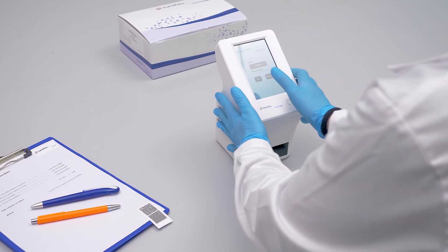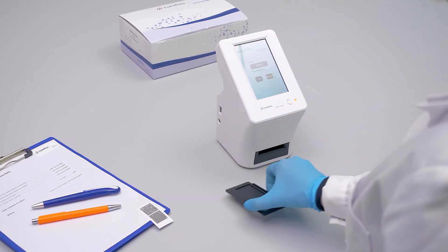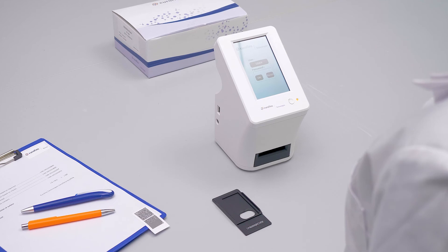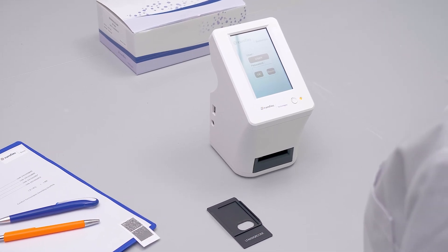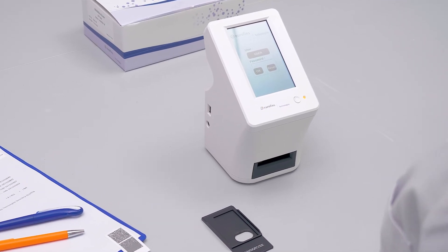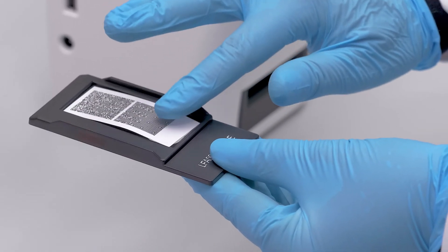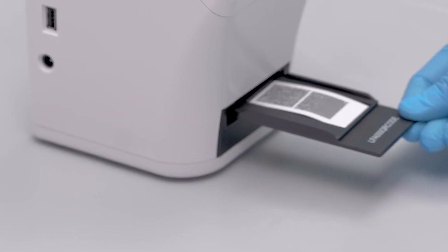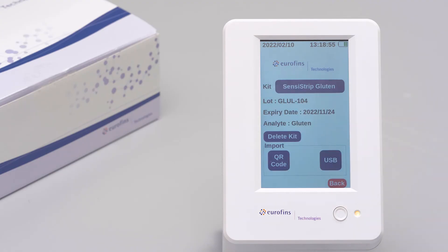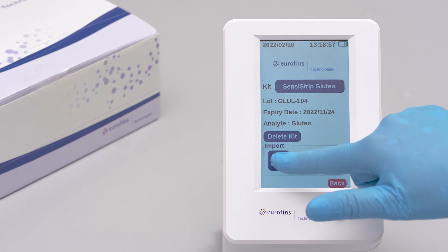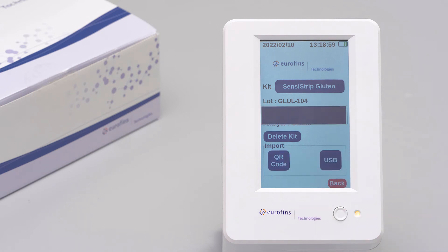For a digital interpretation of the results, a new portable reader designed to eliminate uncertainty and personal interpretation can be used. Turn on the reader and insert the QR code provided in the kit using the appropriate adapter to load the method and batch information into the machine.